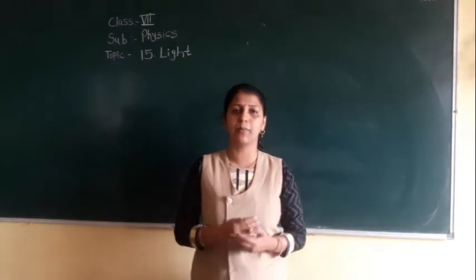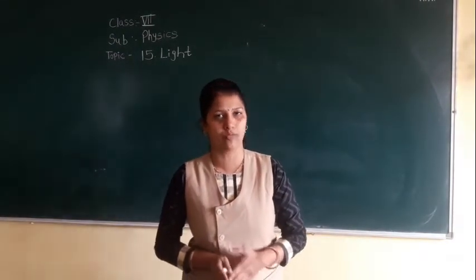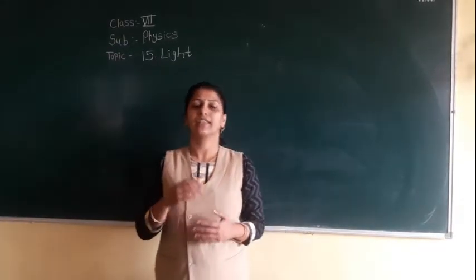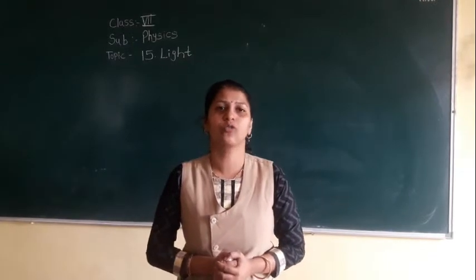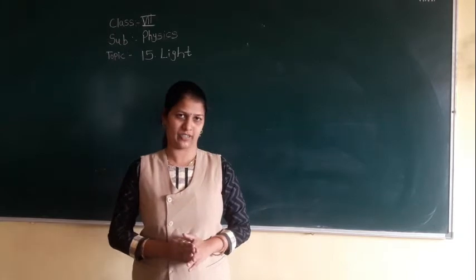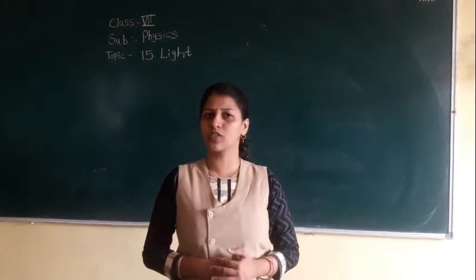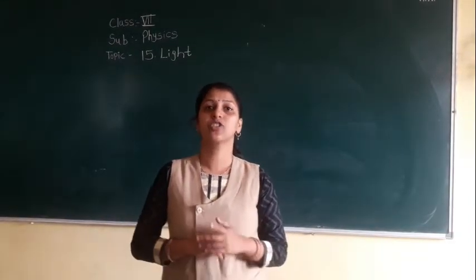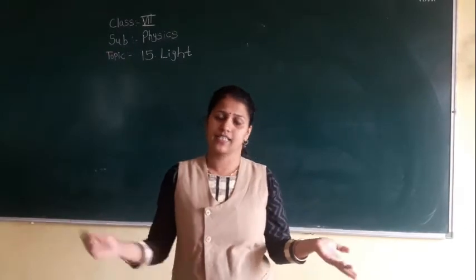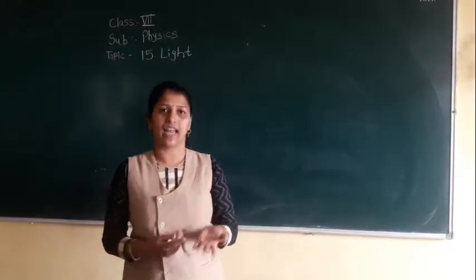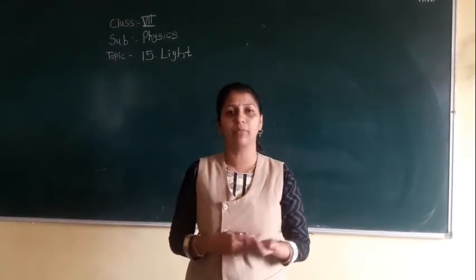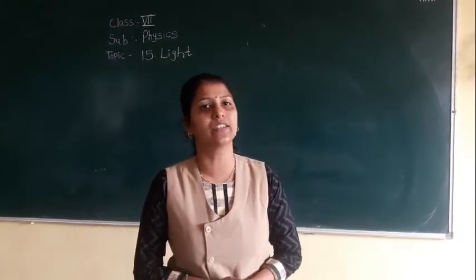Then we have discussed luminous and non-luminous objects. What is meant by a luminous object? An object through which light can be emitted is called a luminous object. The sun, candle, and stars can emit light — they have their own light, so they are called luminous objects.